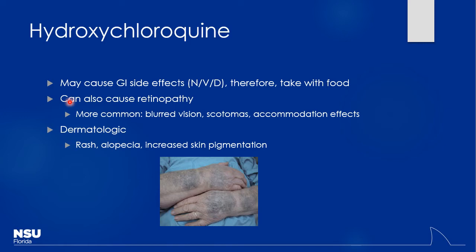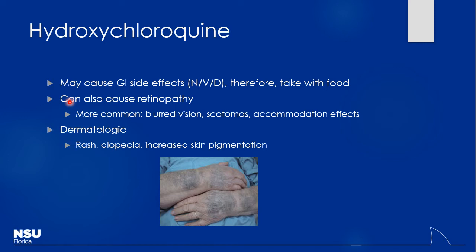You do want to monitor for visual acuity both at baseline and follow-up because you can actually develop a retinopathy with hydroxychloroquine. If patients notice any changes in vision, they probably need to stop therapy immediately and get checked out. You can also see some increased skin pigmentation — a grayish discoloration. Let patients know that's a normal effect to see with more chronic therapy.